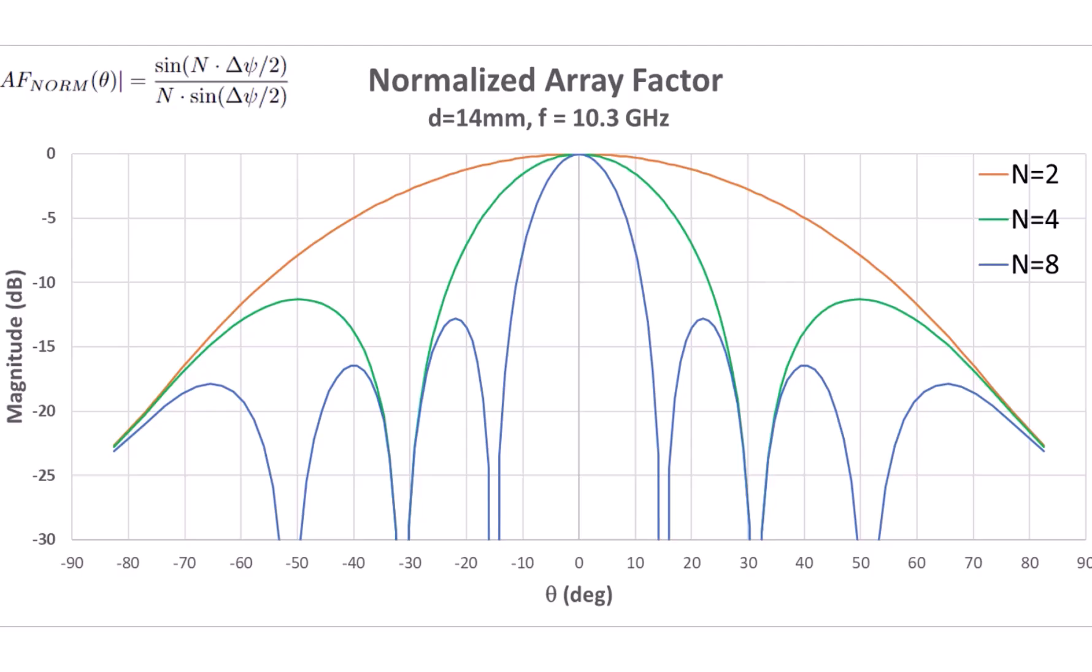Here's that array factor equation plotted for different numbers of elements. The x-axis is steering angle, which theta, which you'll remember from the last video, is just a function of the phase shift applied to each of the elements. We could plot that phase shift on the x-axis, but most of us don't think in terms of phase shift, so it makes sense to just convert that to a steering angle.